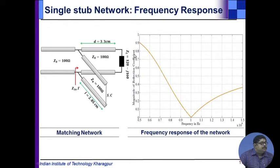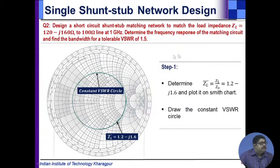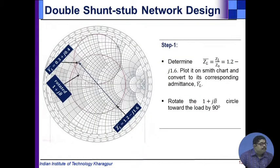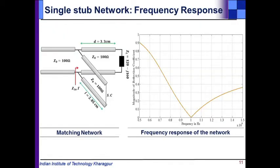Plotting the frequency response shows good matching at 1 gigahertz with degradation away from that frequency. We determine the bandwidth for a tolerable VSWR of 1.5, finding the frequency points where VSWR rises to that value. Similarly, we can examine the double shunt stub matching network and compare its frequency response to the single stub design.